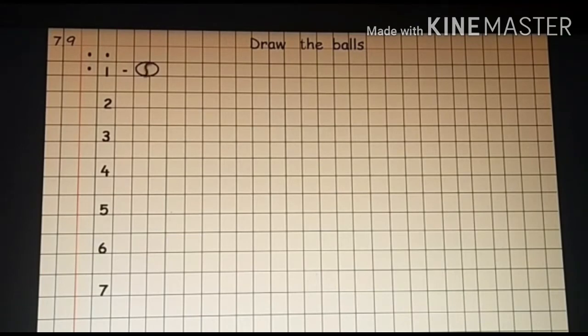And write S in it. For two, make two circles and write S in each. This is the way we make the balls.